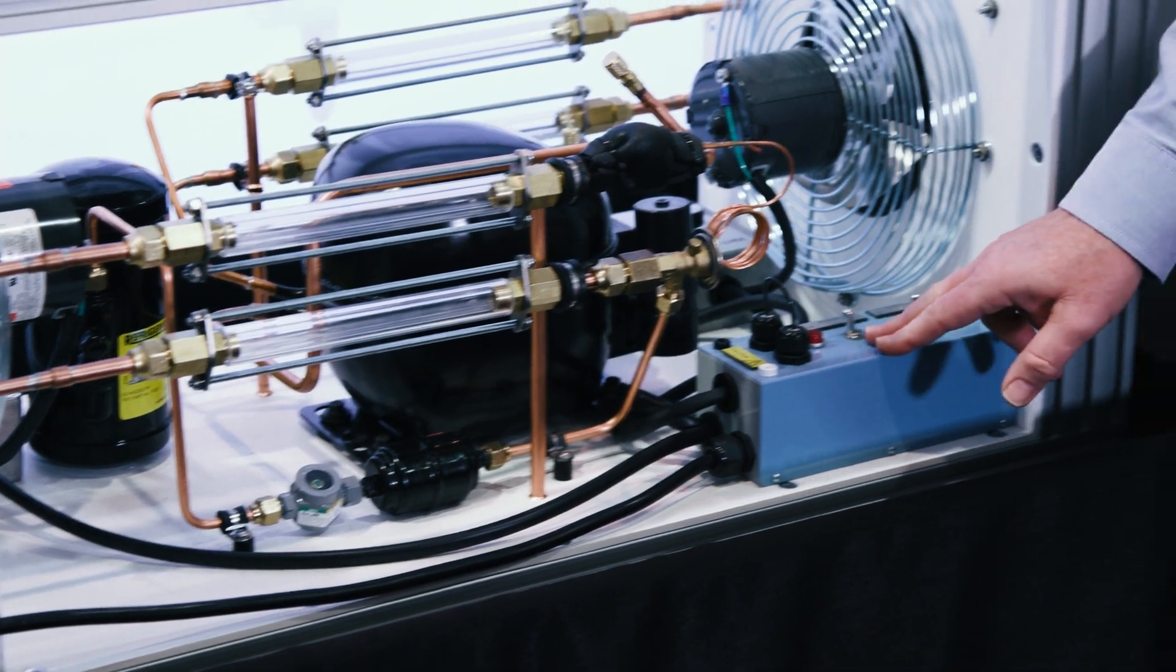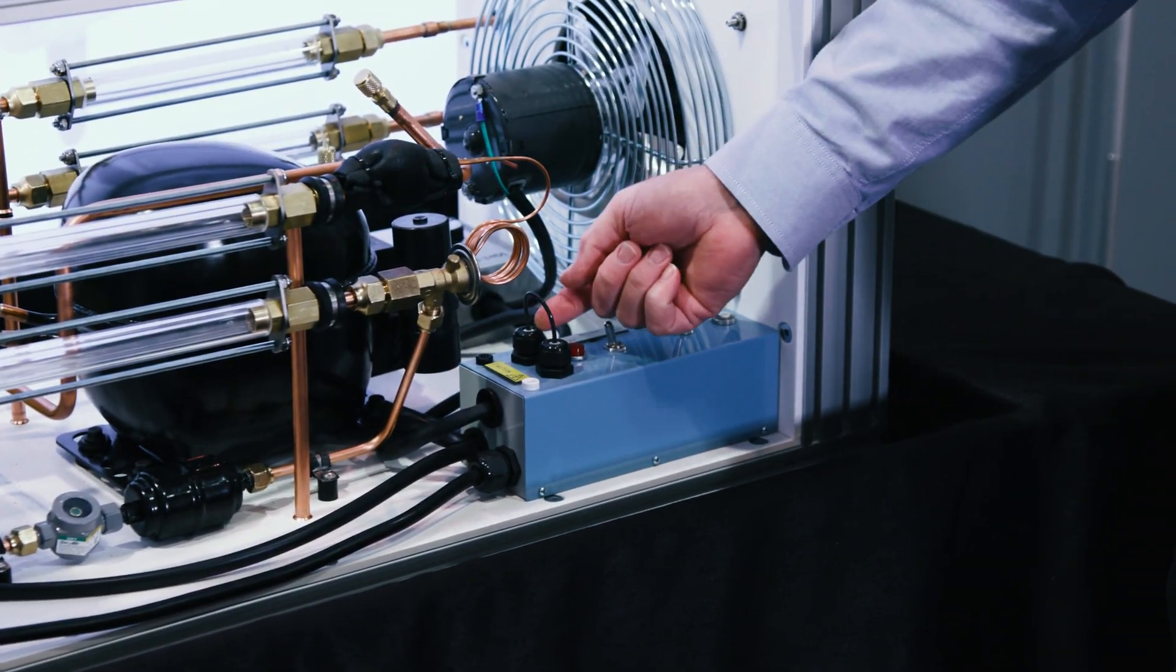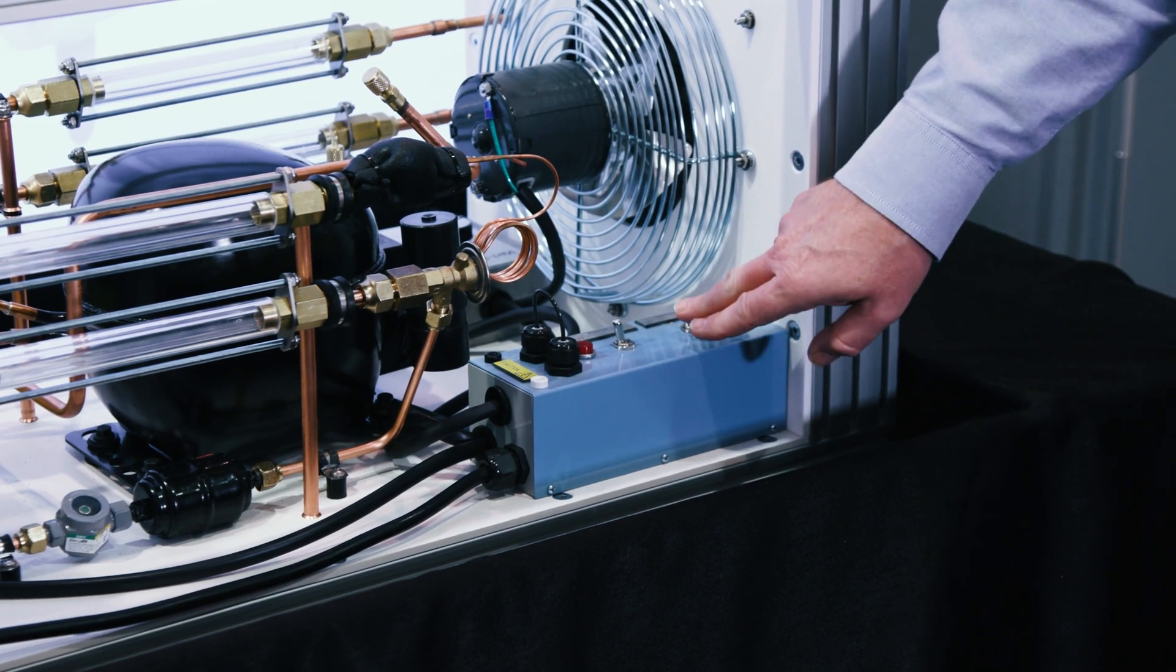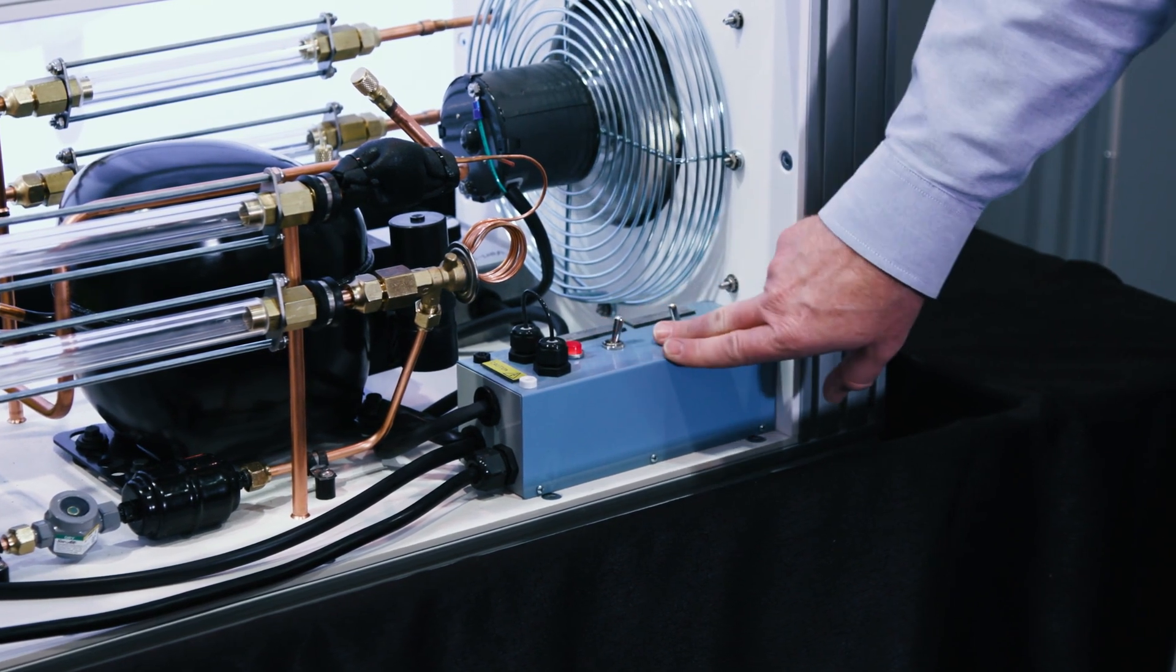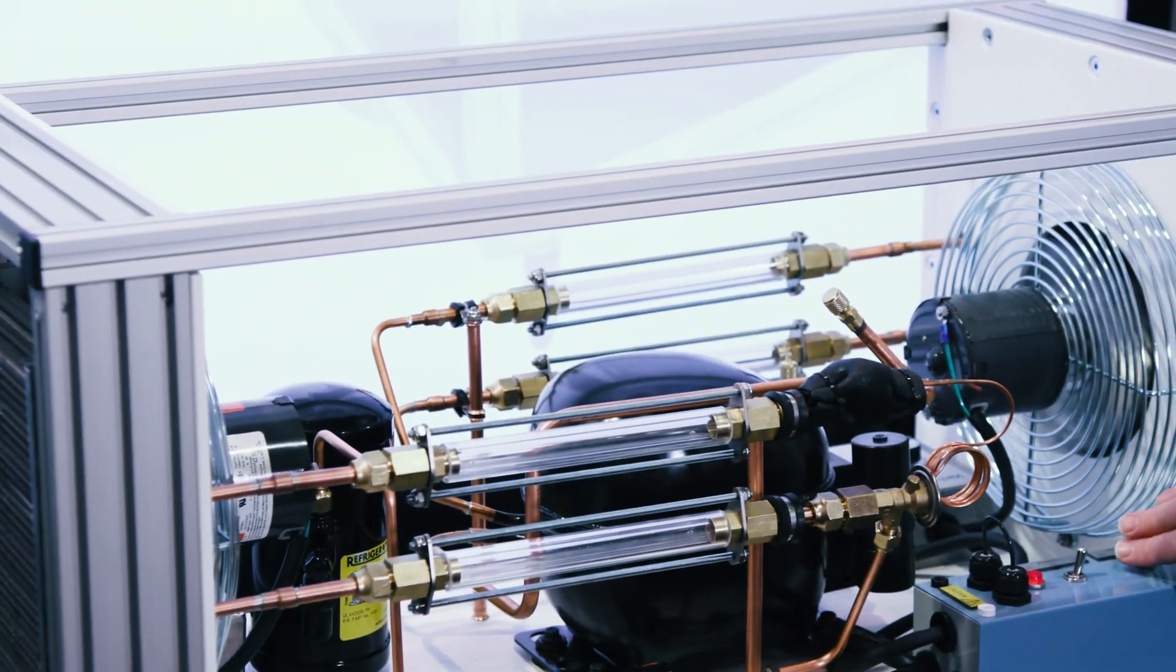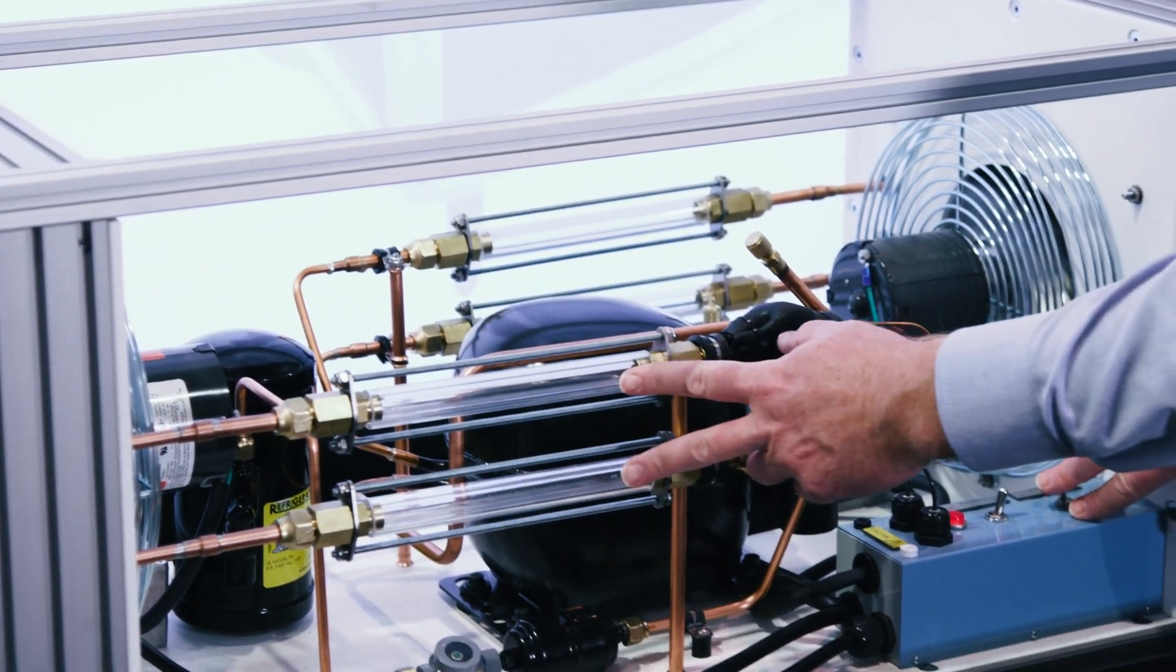And over here we've got our controls for it. We can even take an amp draw, show them how to use our amp meter. So I want to turn these on. We have a power switch. This turns on our indoor and outdoor fans. And then if you watch right here...